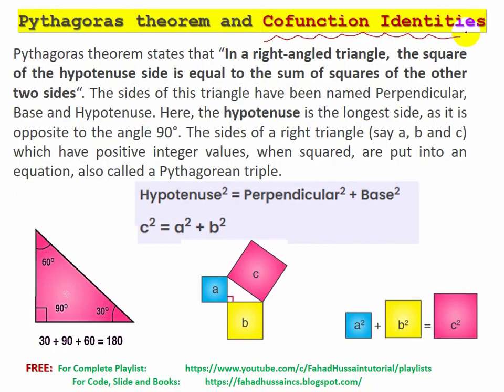The basic term is the Pythagorean theorem — different words are used to represent it. One of the famous names is the Pythagorean theorem. In a right-angled triangle, the square of the hypotenuse side is equal to the sum of the squares of the other two sides.